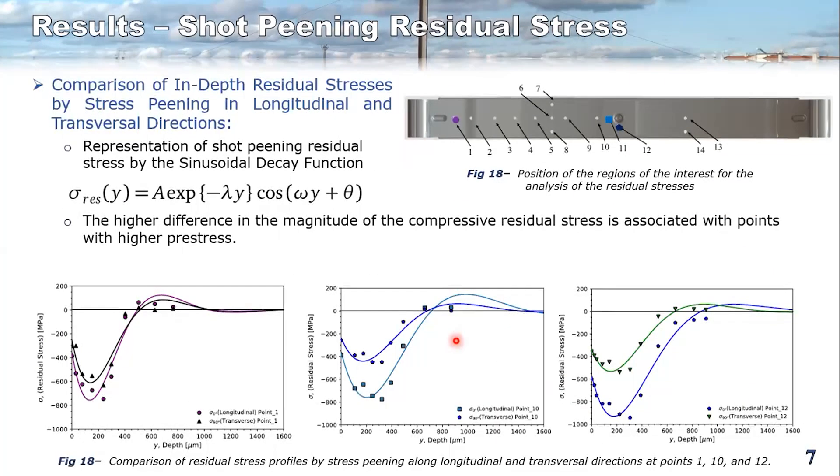And another result that we can observe is the difference when you analyze the compressive residual stresses in the longitudinal directions or in the transversal directions. We can see here using the same formula that there is a difference and the difference depends on the zone where we are analyzing the residual stresses.